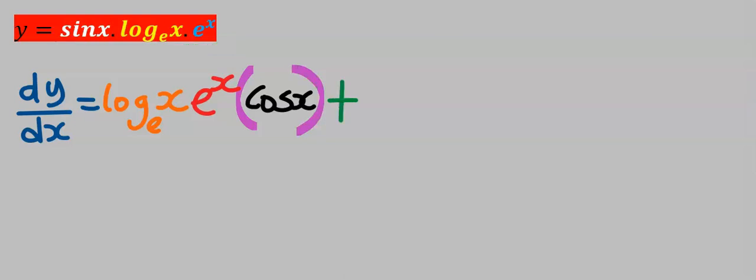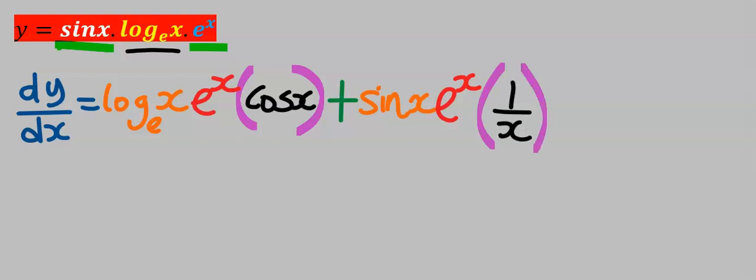Next, I'm going to put sine x and exponential x constant, and I'm going to differentiate the natural log of x, which is one over x. Remember to put it in brackets. Next, I will put a plus.